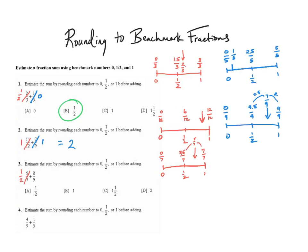Then I'm going to do 8 ninths. Draw my little number line: 0, 1 half, 1 whole. So 0 ninths, 9 ninths, and 4 and a half ninths. 8 ninths is probably somewhere right around there. It is only 1 ninth away from 9 ninths, but it is 3 and a half ninths away from 4.5 ninths. So it is closer to 1 whole. My new problem is 1 half plus 1 whole equals 1 and 1 half.